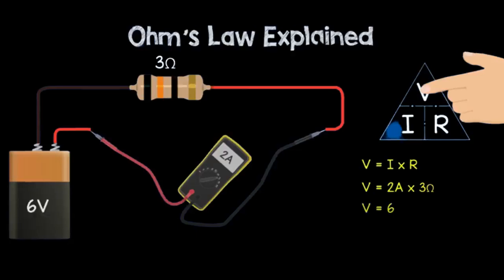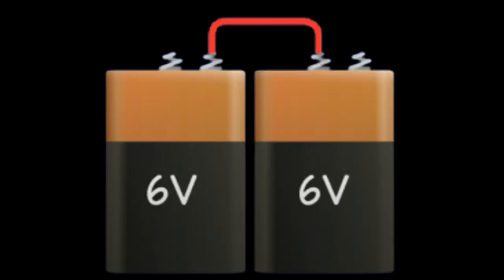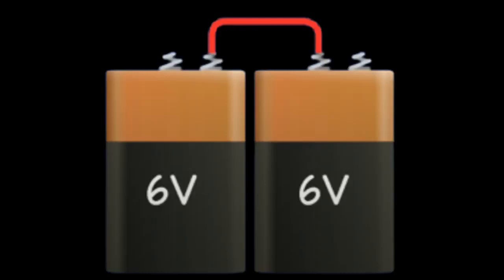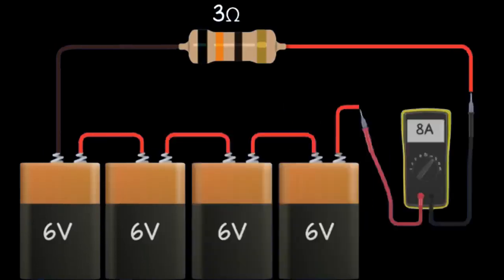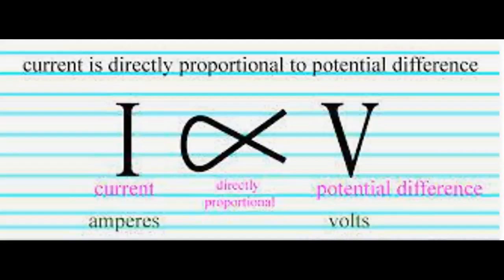Now returning to the circuit, doubling the voltage by connecting two 6-volt batteries in series produces 12 volts. When we connect this to the same circuit, the current also doubles to 4 amps. If we increase the voltage to 24 volts, the current will also double to 8 amps. So what's the connection here? We can see that current is directly proportional to voltage. We can double the current by doubling the voltage.